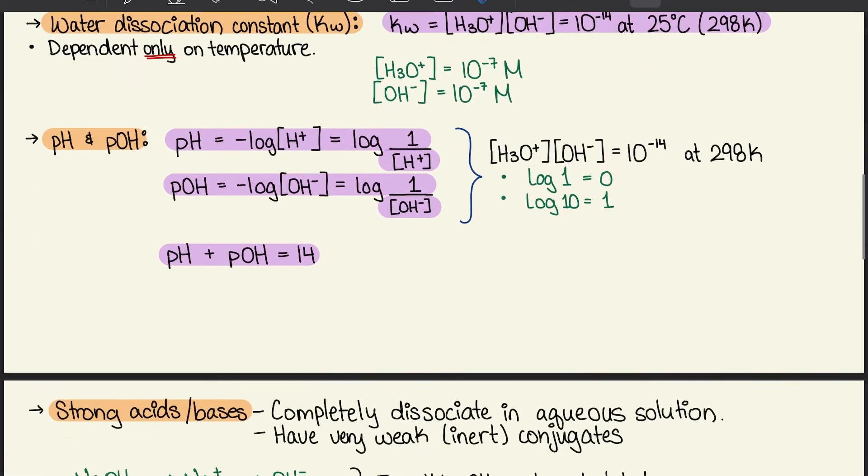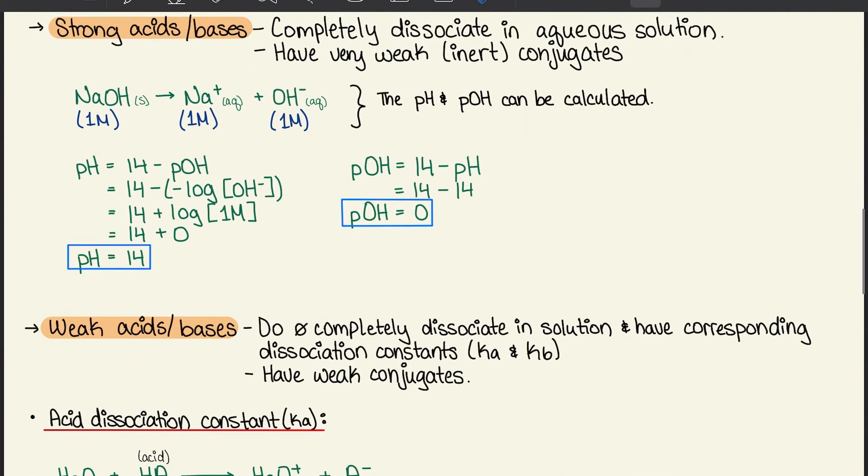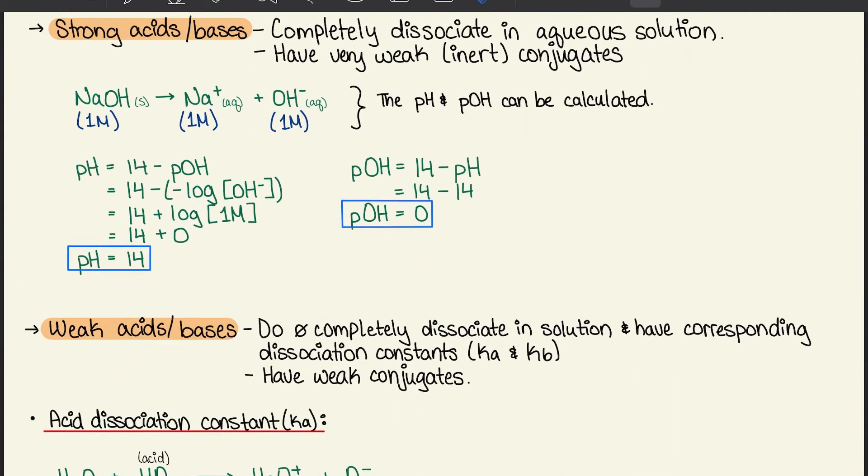Moving on to strong acids and bases, which completely dissociate in aqueous solutions and have very weak inert conjugates. We have NaOH, which dissociates into Na+ plus OH-. We have one mole of each, and the pH and pOH can be calculated.